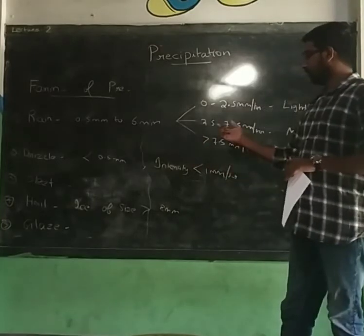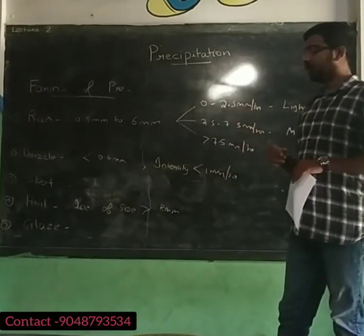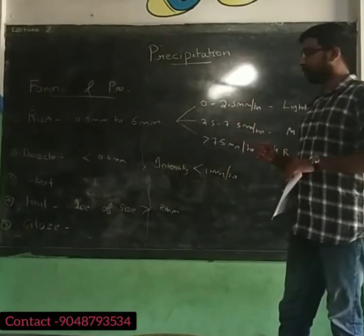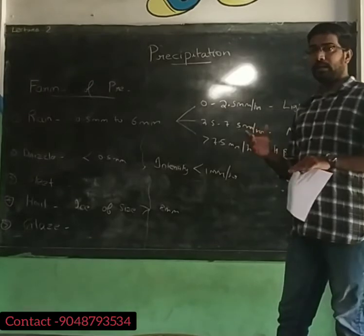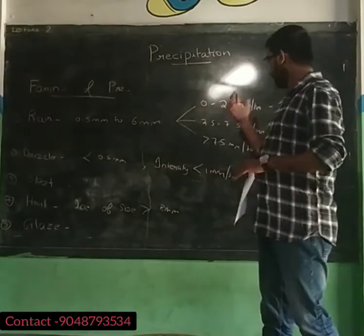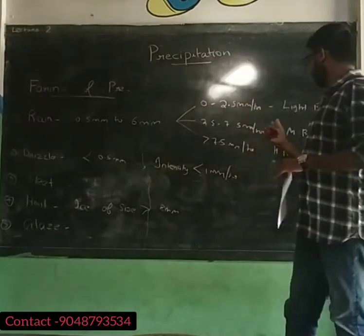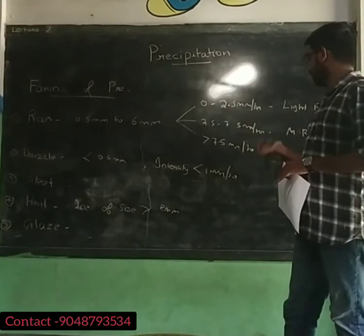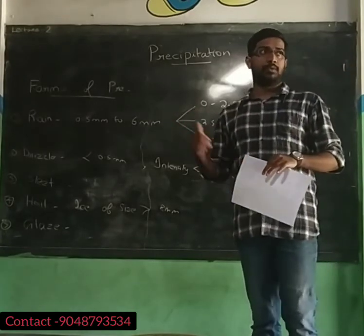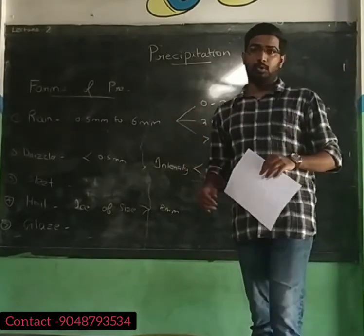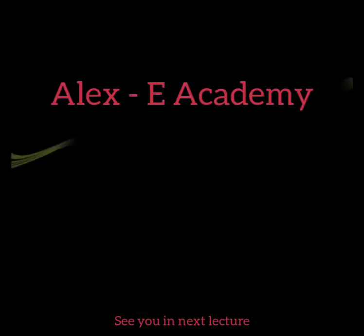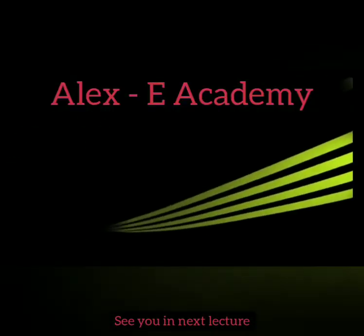This is important for competitive exams such as BSc, SSC, and GATE. For example, if the intensity of rain is between 2.5 to 7.5mm per hour, you should be able to classify it as light, medium, or heavy rain. Thank you very much.